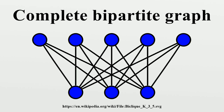In the mathematical field of graph theory, a complete bipartite graph or biclique is a special kind of bipartite graph where every vertex of the first set is connected to every vertex of the second set. Graph theory itself is typically dated as beginning with Leonhard Euler's 1736 work on the Seven Bridges of Königsberg. However, drawings of complete bipartite graphs were already printed as early as 1669, in connection with an edition of the works of Raymond Lull edited by Athanasius Kircher.